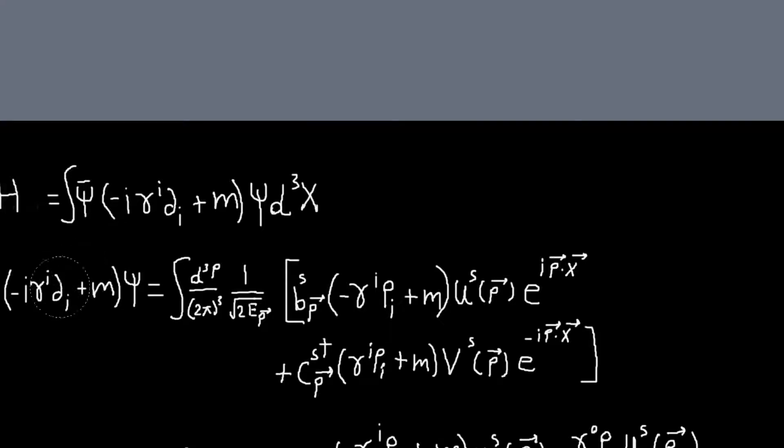To do that we can move this in to inside this expression, the sum. So it will act on this us e to the i p dot x, and so when that operator acts on it, the derivative, I'll get a minus i p i.